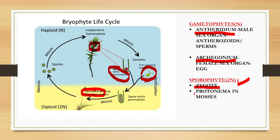There is one new term to learn here: protonema. Protonema is the first structure produced from the spores. Initially, it does not produce an erect plant — it produces a creeping plant, which then grows into an independent gametophyte. This initial stage at the beginning of the gametophyte phase is called protonema, and it occurs only in mosses, not in liverworts.